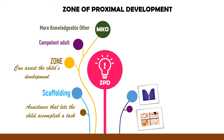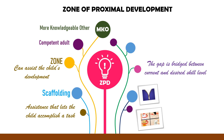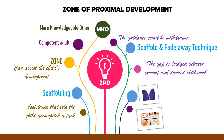These examples show how the right amount of assistance can allow the child to accomplish the task. The instructor should scaffold in such a way that a gap is bridged between a learner's current skill level and the desired skill level. As learners become more proficient and able to complete tasks on their own that they could not initially do without assistance, the guidance can be withdrawn. This is called the scaffold and fadeaway technique.